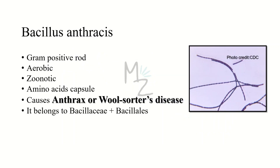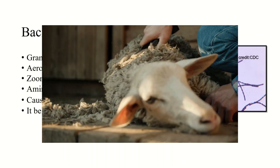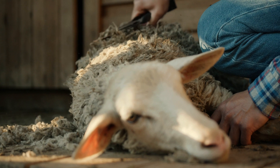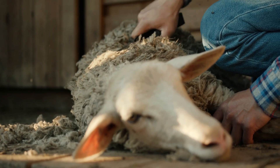Bacillus anthracis is a gram-positive rod and it is aerobic. It is zoonotic, responsible for zoonosis — the transfer of infection from animals to humans; animals can be horses. It is unique because it has an amino acid capsule, that is a polypeptide capsule, as compared to all other bacteria that have a polysaccharide capsule. Bacillus anthracis is responsible for causing anthrax, also called wool sorter's disease, because at the time of removing wool from sheep, humans get contact with the bacteria present on or in the sheep's body.